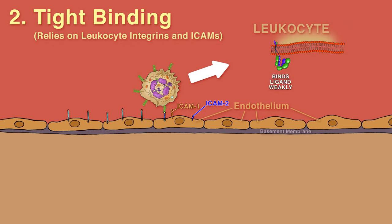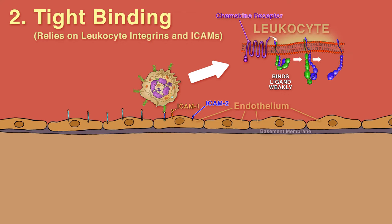Leukocyte integrins normally bind their ligands only weakly. But chemokines bound to proteoglycans on the surface of endothelial cells bind to specific chemokine receptors on the leukocyte, signaling the cell to trigger a conformational change in the integrins on the rolling leukocyte, greatly increasing adhesive ability. As a result, the leukocyte attaches firmly to the endothelium and the rolling stops.